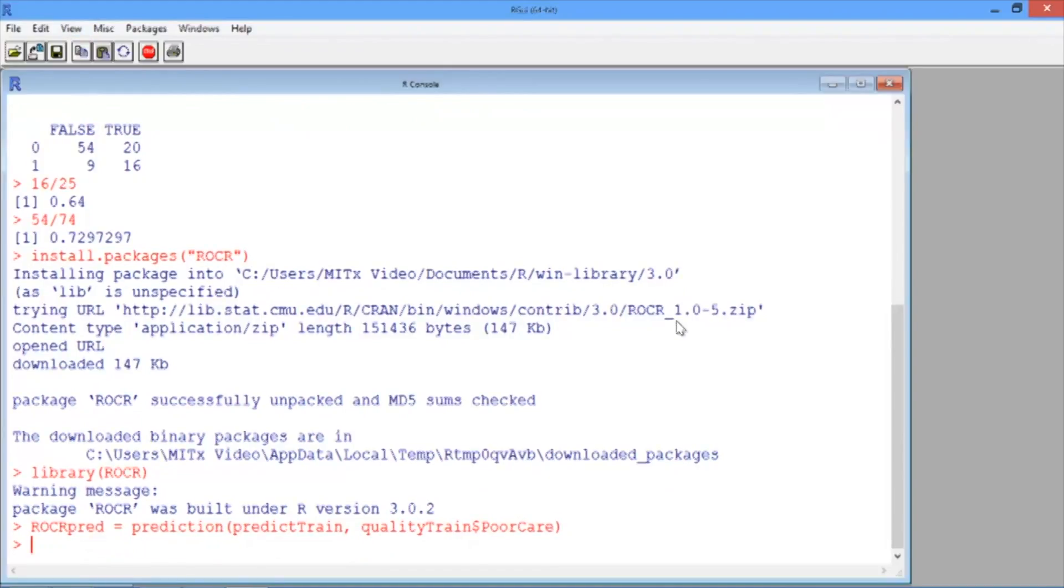Now we need to use the performance function. This defines what we'd like to plot on the x and y axes of our ROC curve. We'll call the output of this ROCRperf and use the performance function, which takes as arguments the output of the prediction function.